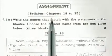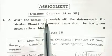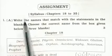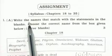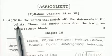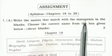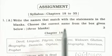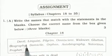Hello students. Today I am going to teach you the second semester exam. The exam's assignment and subject is General Knowledge. The syllabus covers chapters 18 to 35. We start from Exercise number 1A: write the names that match with the statements in the blanks, choosing the correct name from the box given below.